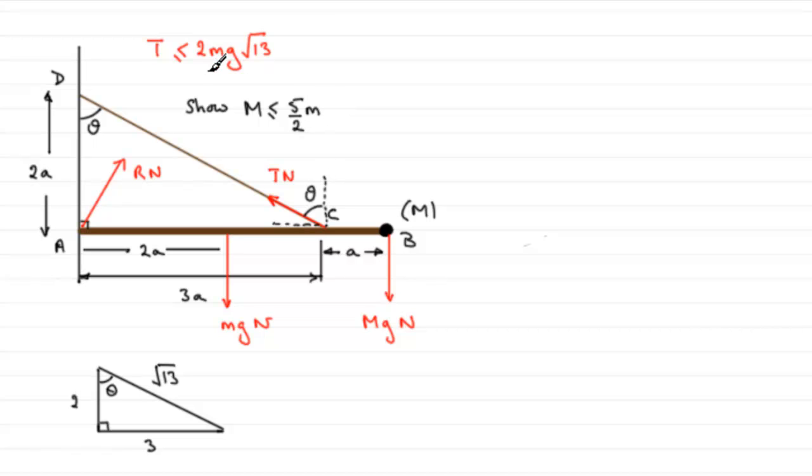So if it doesn't break, that tension must be less than or equal to 2mg√13. So to solve something like this to prove this result, what we need to do is again take moments about A, because it will not include the force on this hinge here, R Newtons.